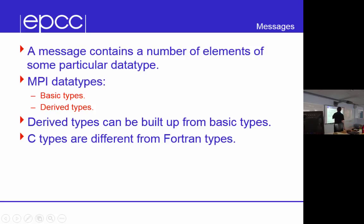You can have your own derived types, and we'll come back to these later. These correspond to either array subsections or, more usefully, structures — or as Fortran calls them, derived types. If you write a C program and declare a structure, there's no way the MPI library can know about it because it's never heard of it. But you can create your own types in MPI corresponding to C structures or Fortran derived types, built up from basic types.